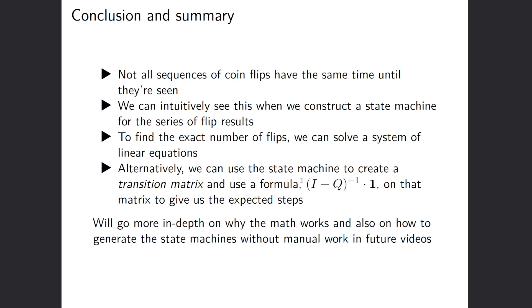Then to find the exact number of flips, we can solve a system of linear equations. We saw that we did it, we did the work, it worked, but that was a lot of work. So alternatively, we could use a state machine to create a transition matrix and then use the formula I minus Q inverse. And then sum those rows on that matrix by multiplying by the one vector on that matrix to give us the expected steps from every transient state to the absorbing state.